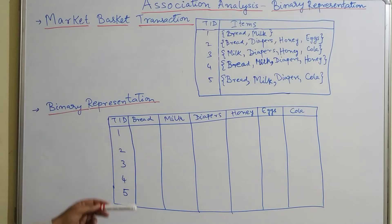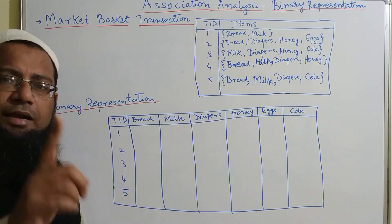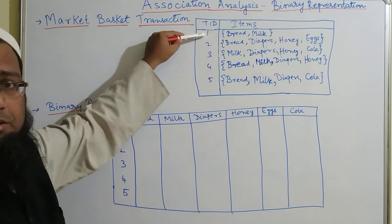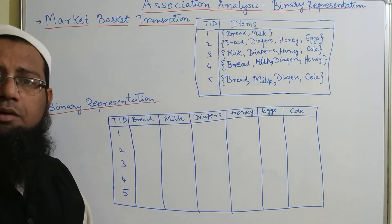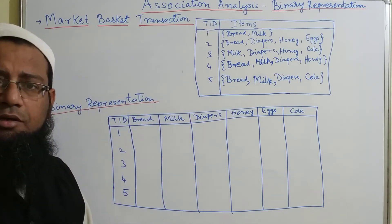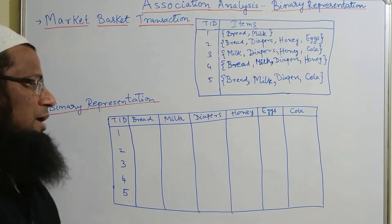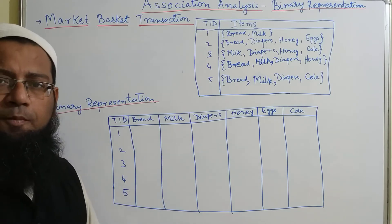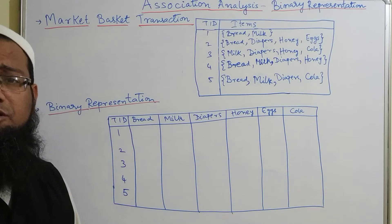We are going to mark those items as 1 if that item is present in that transaction, and if the item is absent we are going to mark it as 0 in the binary representation, if it is absent from that specific transaction ID.